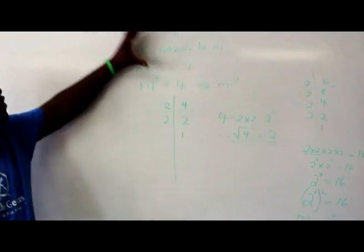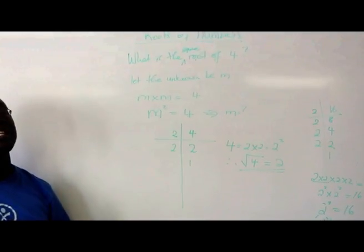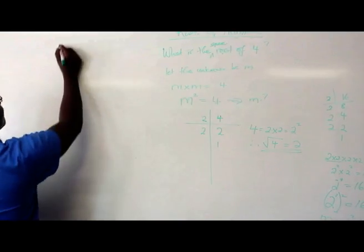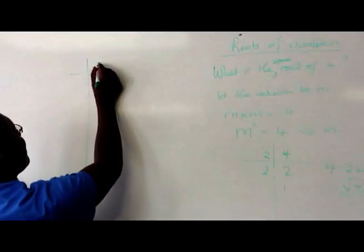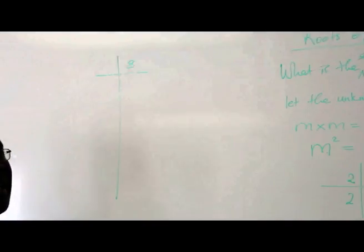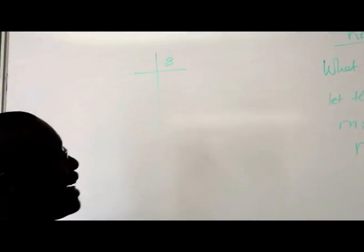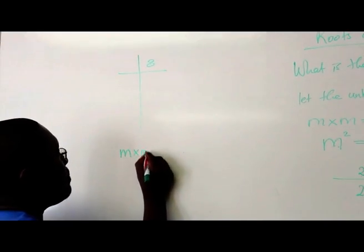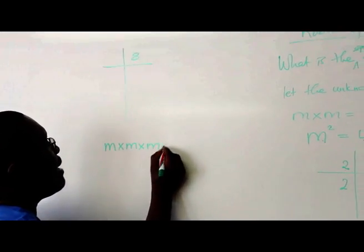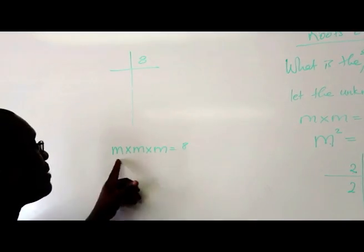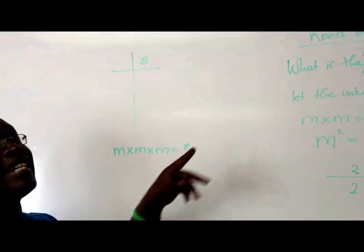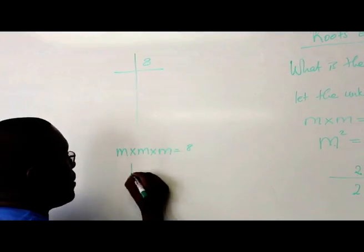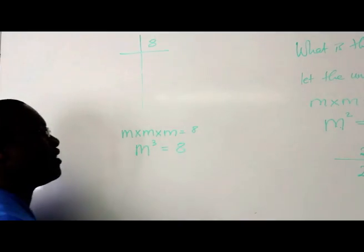Once you've known about the square root, you can even look at the cube root. I'll use 8 to calculate the cube root. What do we mean by cube root? We're saying which number can multiply itself 3 times to get 8? So m times m times m would be m cubed, which is equal to 8.